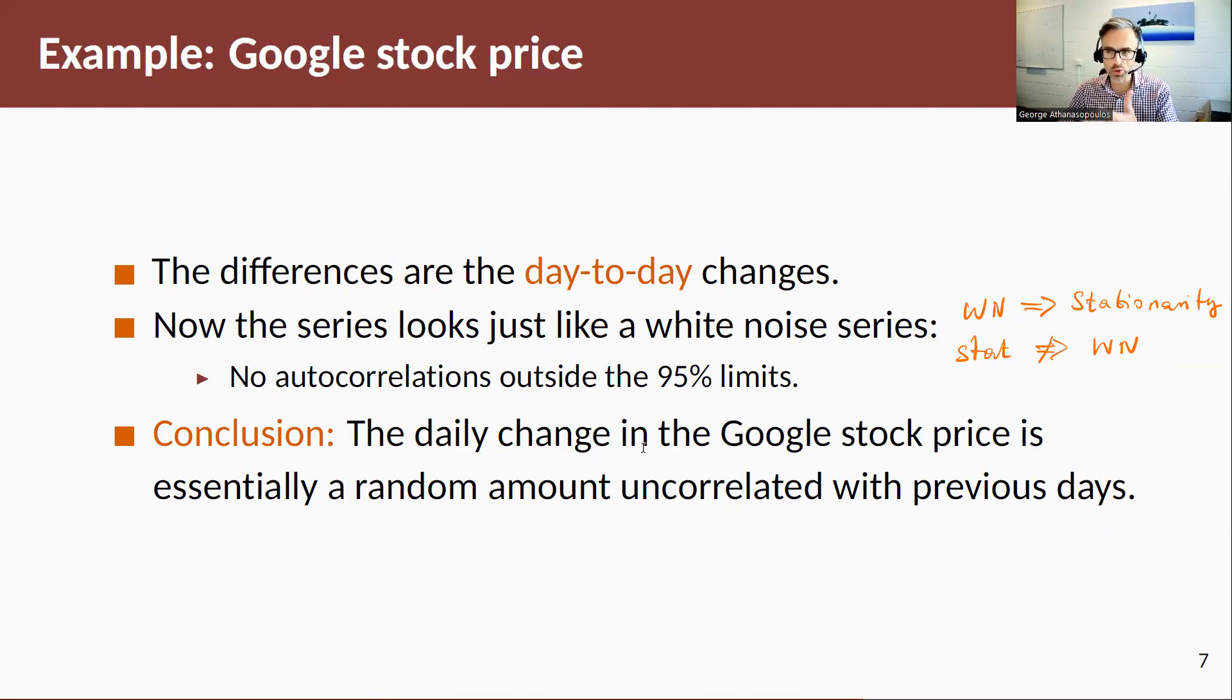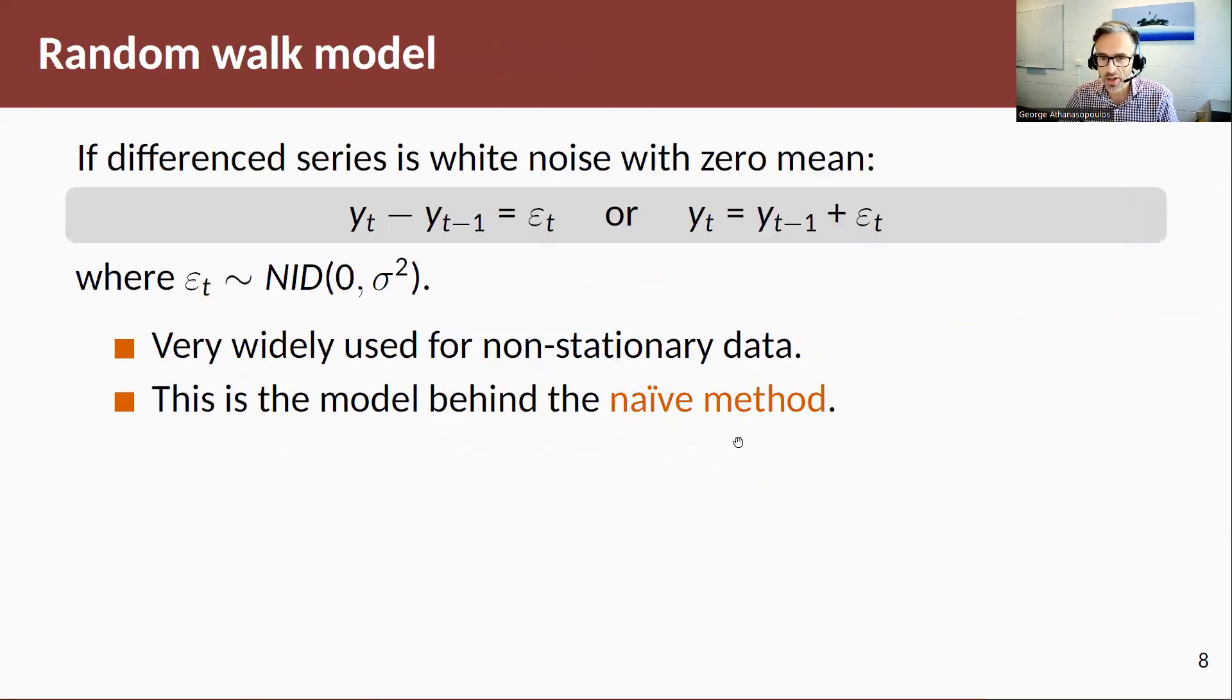The conclusion that we draw from this simple analysis is that daily change in the Google stock price is essentially a random walk amount uncorrelated with a previous state. Now a model to model this type of time series is the random walk model.